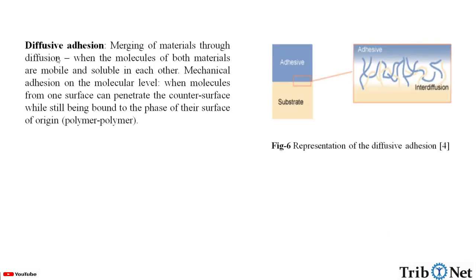The last one is diffusive adhesion: merging of the materials through diffusion when the molecules of both materials are mobile and soluble in each other. This is mechanical adhesion on the molecular level, where molecules from one surface can penetrate the counter surface while still being bound to the face of the surface of origin. This can be seen in polymer-polymer attraction. Here we can see the representation of diffusive adhesion.